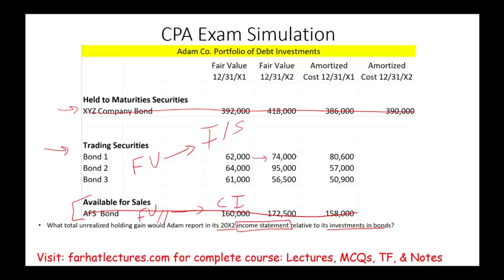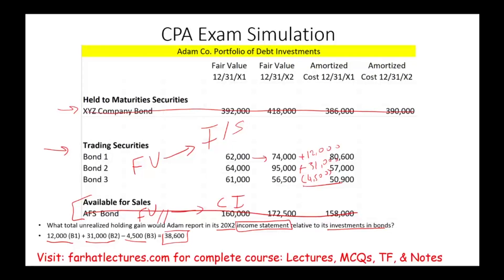Once we identify that trading securities are reported on the income statement, we compute the gain or loss for the portfolio. Bond one went from 62,000 to 74,000 — a gain of 12,000. Bond two went from 64,000 to 95,000 — an increase of 31,000. Bond three went from 61,000 to 56,500 — a loss of 4,500. Netting the gains and losses, the gains from bond one plus bond two minus the loss gives us a net gain of 38,500, which although unrealized, is reported on the income statement.